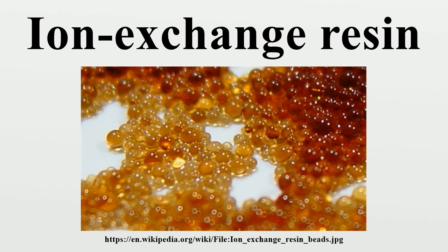The ion exchange process is also used to separate other sets of very similar chemical elements, such as zirconium and hafnium, which is very important for the nuclear industry. Zirconium is practically transparent to free neutrons and is used in building reactors, but hafnium is a very strong absorber of neutrons and is used in reactor control rods.